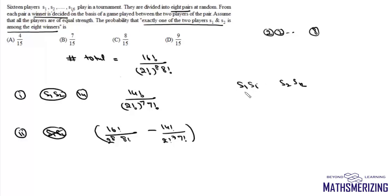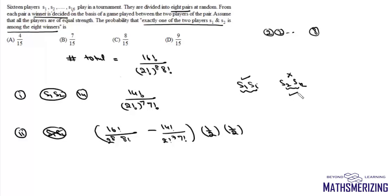We need to find the probability that exactly one of them wins. The probability of S1 winning is 1/2, and the probability of S2 losing is 1/2. So we have two cases: either S1 wins and S2 loses, or S2 wins and S1 loses. This gives the favorable number of cases in the second case.